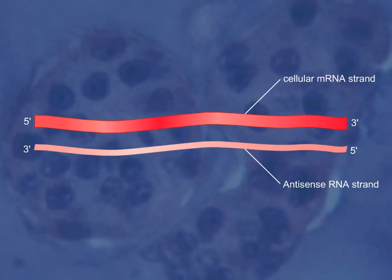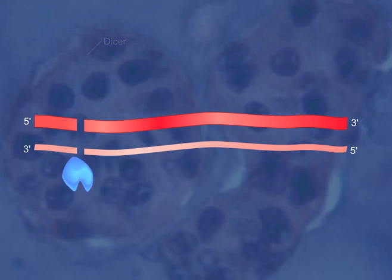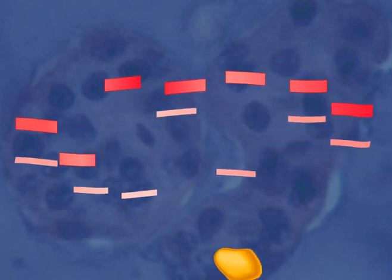Creation of the RISC occurs when double-stranded RNA is found in the cell. This double-stranded RNA is recognized by an endonuclease known as DICER that cuts it into pieces that are 21 to 23 nucleotides long. An antisense RNA fragment can then associate with proteins to form the RISC.